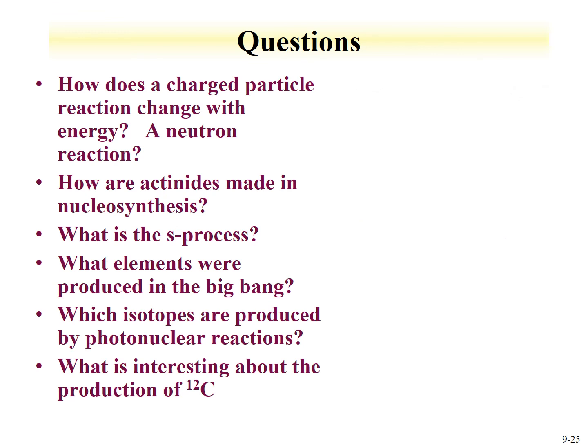How are actinides made in nucleosynthesis? Through the R process — a rapid process occurring during an event in which a large number of neutrons are liberated. Neutron captures occur faster than decay of the resulting isotope. The S process is how the bulk of elements from iron up to bismuth are made: it's the slow process, where a nucleus captures a neutron to form a heavier isotope. If that isotope is stable it builds up; if radioactive, the neutron converts to a proton through beta decay, moving up the periodic table. With the S process, a radioactive isotope has a very high probability of undergoing beta decay rather than capturing another neutron.